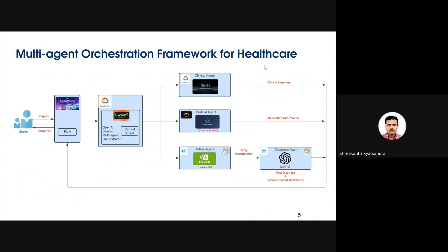The process flow looks like this: when the user submits a query via the AgentForce UI, the agent action configured behind this agent has a flow which makes an HTTP callout to the Swarm orchestration service. This service has been deployed on Google Cloud and is exposed as a REST API service. The central agent, the main component in this orchestration service, forwards the user's question based on context to a specific AI agent designated for that particular task.